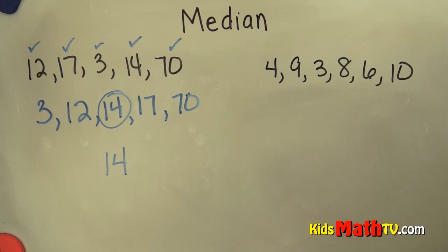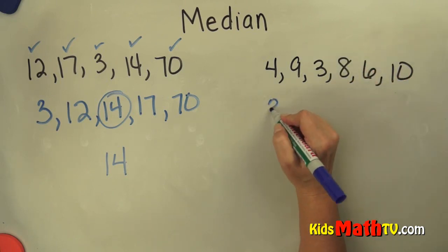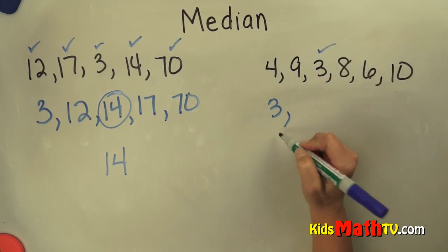Okay, here's another set of numbers. Again, I have to put them in order from least to greatest before I can find the median. So the smallest number here is a 3. Mark that off.